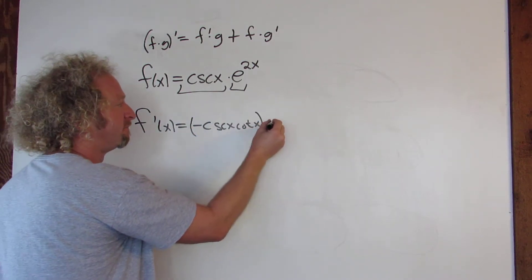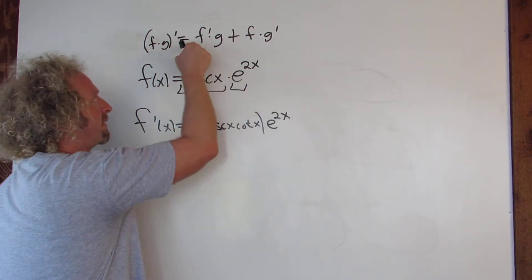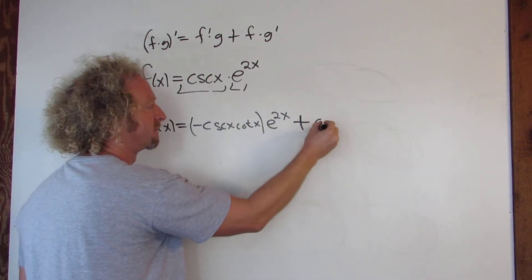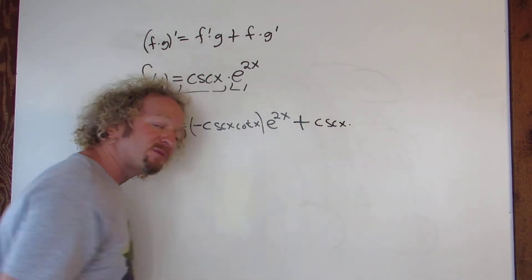And then times the second—derivative of the first times the second—plus the first times the derivative of the second.